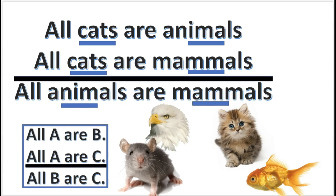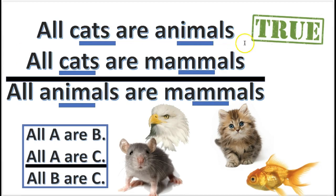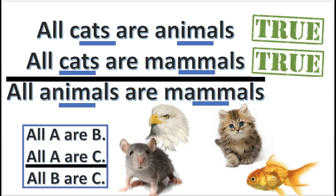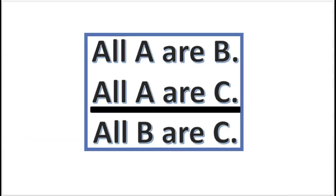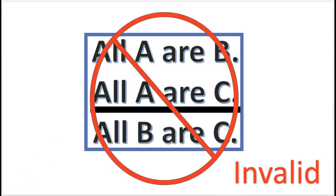Why does this prove it's invalid? Well, all cats are animals — that's true. Next premise: are all cats mammals? Yes, that's true. Now the conclusion: all animals are mammals — is that true? Fish are animals and they're not mammals, so that's false. You've proven that you have true premise, true premise, and a false conclusion just by simply changing the terms around. After you get this down, you'll hear an argument and be able to swap these terms around to prove it's invalid that quick.